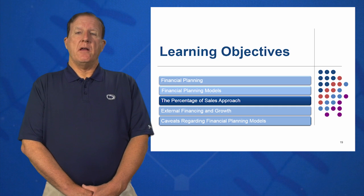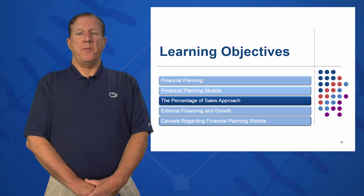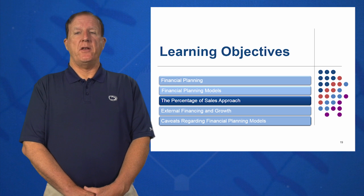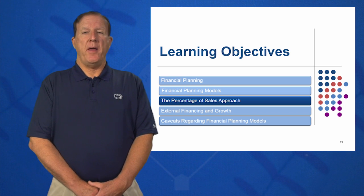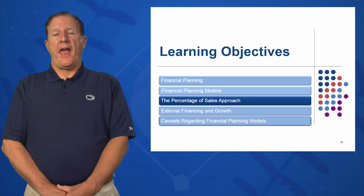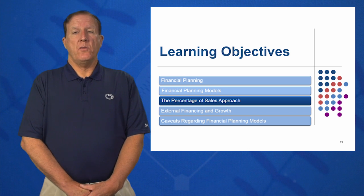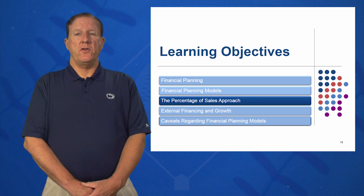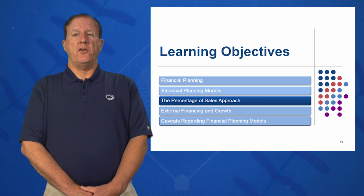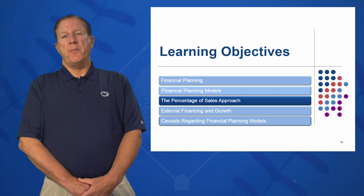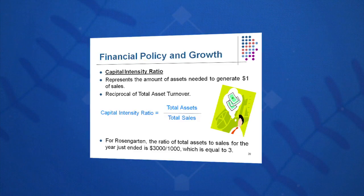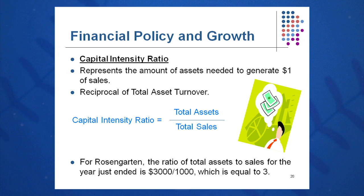In learning objective number three, we're very interested in the percent of sales approach. This is a method we can use based on actual information from last year to forecast what is going to happen in the future. In this case, we're going to use the percent of sales approach with Huffman Company and project their year two forecasted income statement, balance sheet, and cash flow. One ratio we're going to introduce here is the capital intensity ratio — the total assets needed to generate one dollar of sales.